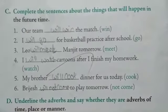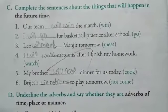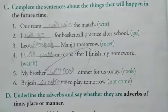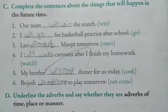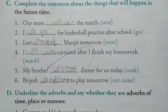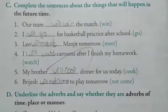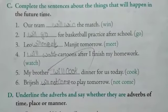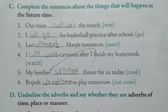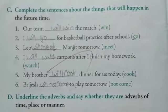This is the way to write the sentences of future tenses. Fourth one. I dash cartoons after I finish my homework. The word given in the bracket is watch. So the sentence changes to: add will to the word. We write, I will watch cartoons after I finish my homework.